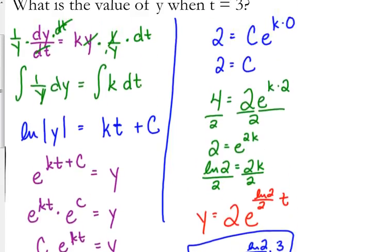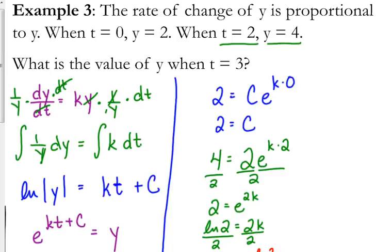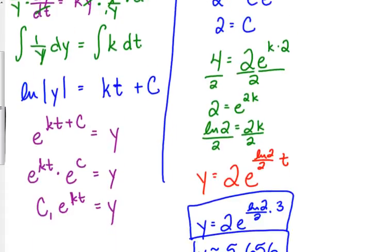But any time you have the situation where it says the rate of change of some variable is proportional to that variable, you can jump straight to this right here. The fact that that variable is equal to constant times e to the kt, if that's the exact scenario.